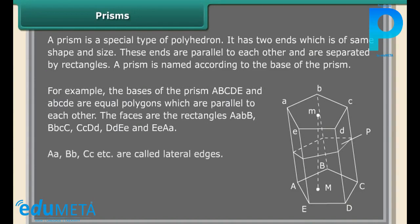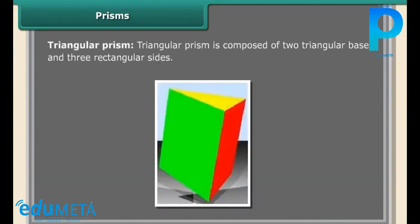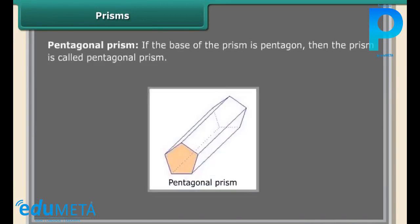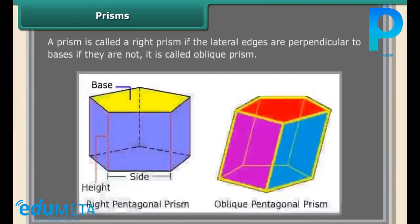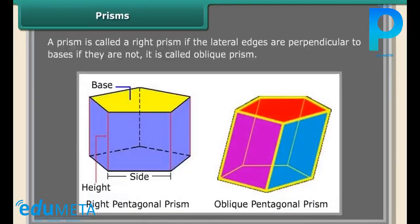Prisms are classified according to their bases. Triangular prism: a triangular prism is composed of two triangular bases and three rectangular sides. Pentagonal prism: if the base of the prism is a pentagon, then the prism is called a pentagonal prism. A prism is called a right prism if the lateral edges are perpendicular to the bases. If they are not, it is called an oblique prism.